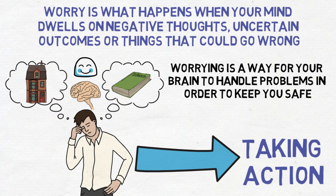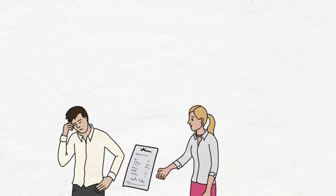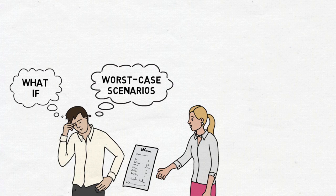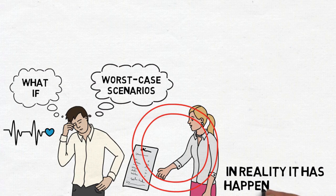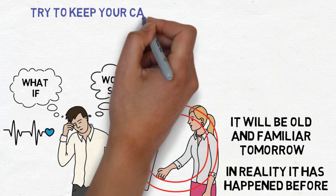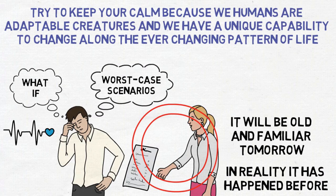Hence worries, doubts and anxieties are a normal part of life and while it is natural to worry about an unpaid bill, an upcoming job interview or a first date, normal worrying becomes excessive when it is persistent and uncontrollable. We constantly worry every day about these what-ifs and worst-case scenarios. We need to understand that whatever it is that we are worrying about, in reality it has happened before. What seems to be uncomfortable and scary now will soon be old and familiar tomorrow. So instead of worrying too much, try to keep your calm because we humans are adaptable creatures and we have a unique capacity to change along the ever-changing pattern of life.